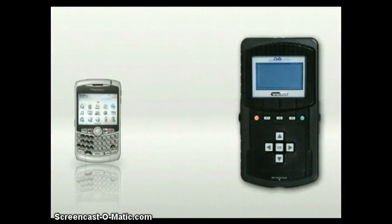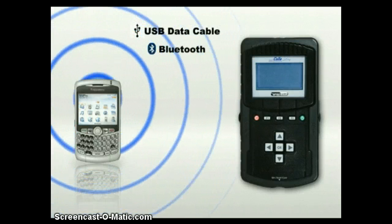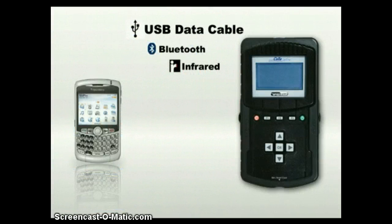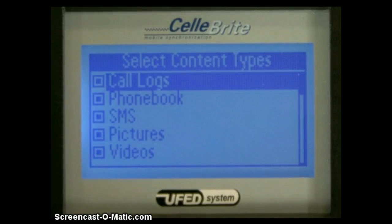The UFED supports different interfaces to connect to phones. Options include data cables, Bluetooth, and infrared. It's recommended to use a cable connection whenever possible for fastest operations. Next, select the content types that you want to extract from the phone. This list of options will vary depending on the features of the phone model selected.